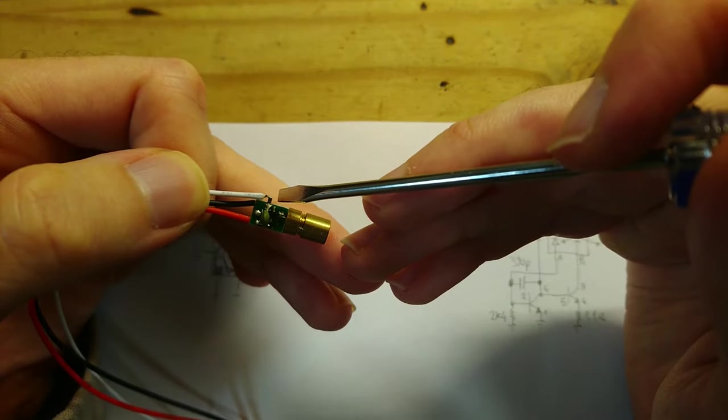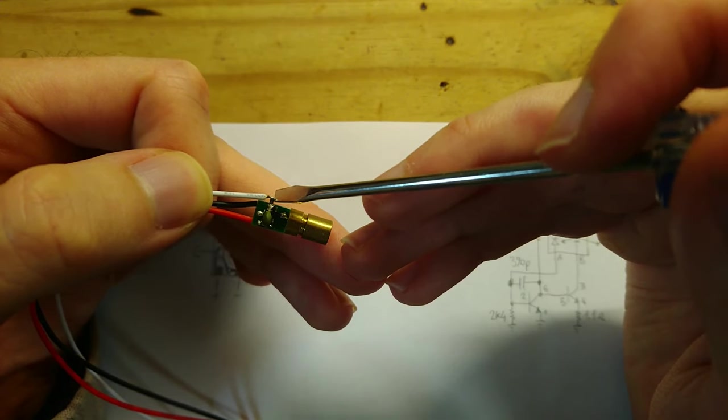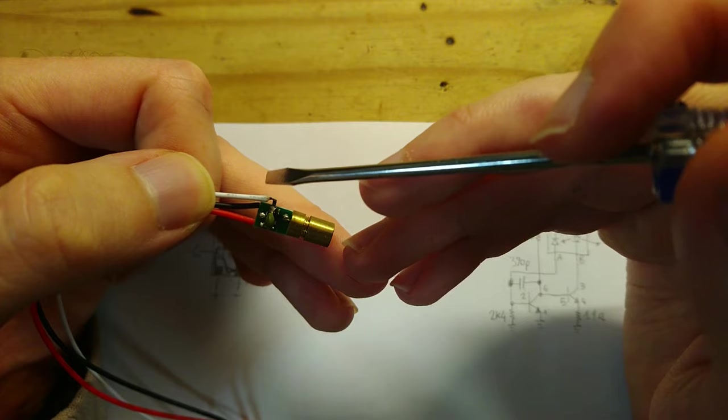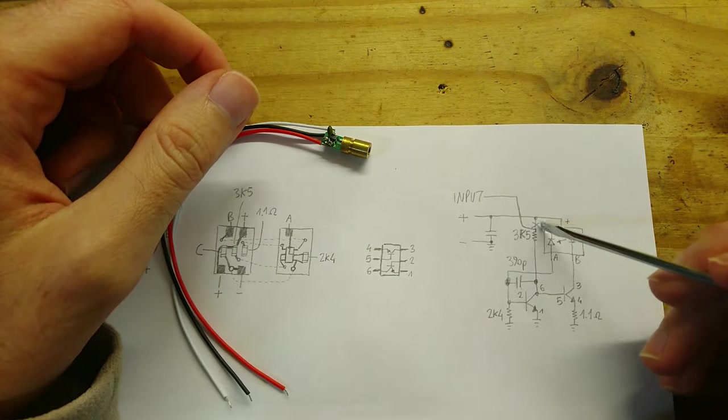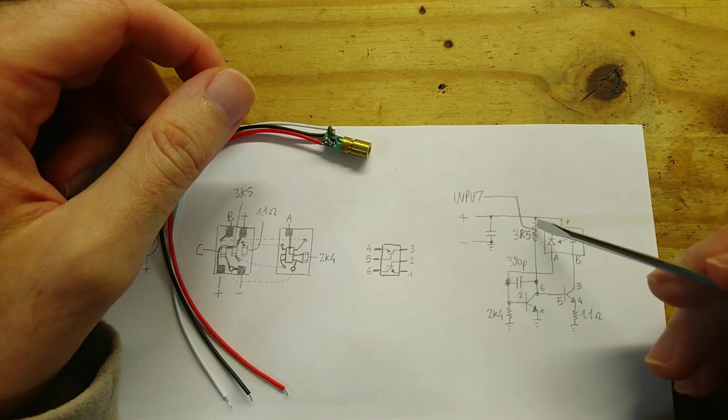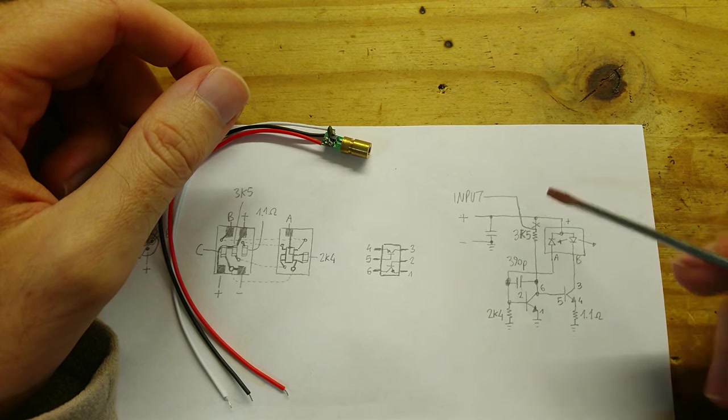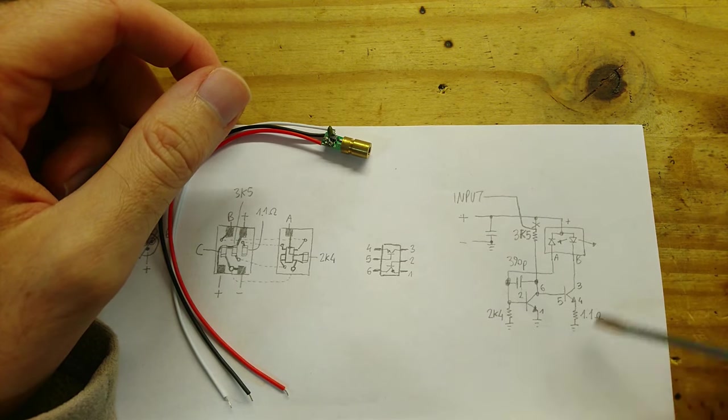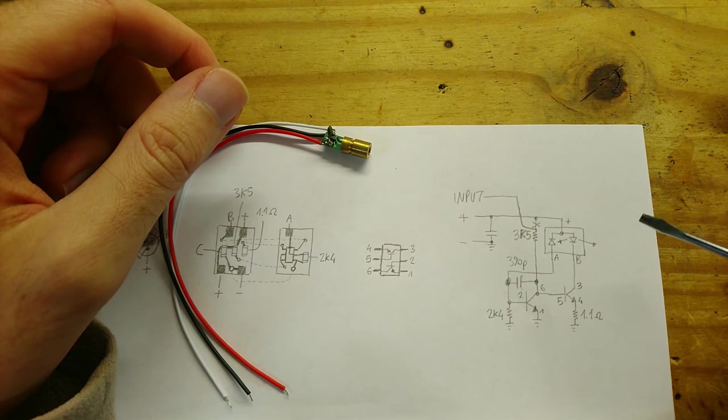And the second modification is that I removed one resistor from the circuit and I attached it to an external wire. It is this resistor. And so, basically I cut this connection and I connected the other side of the resistor to an input wire. This makes it possible to turn on and off the laser diode with a logical signal in order to be able to modulate it.